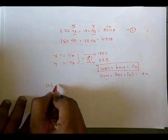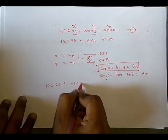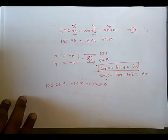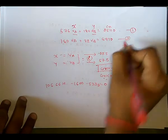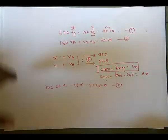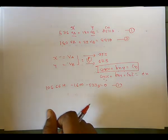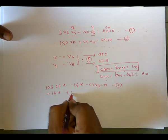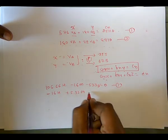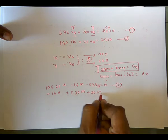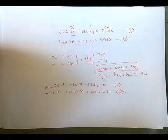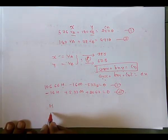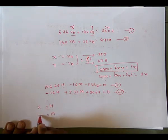Let's take another example. Suppose equation one is: 106.66·h minus 16·m minus 533.33 equals 0. Equation two is: minus 16·h plus 5.33·m plus 26.67 equals 0. We need to find the values of h and m, where h corresponds to x and m corresponds to y.